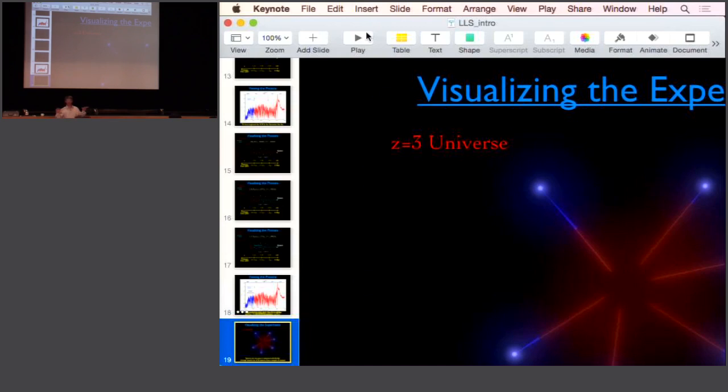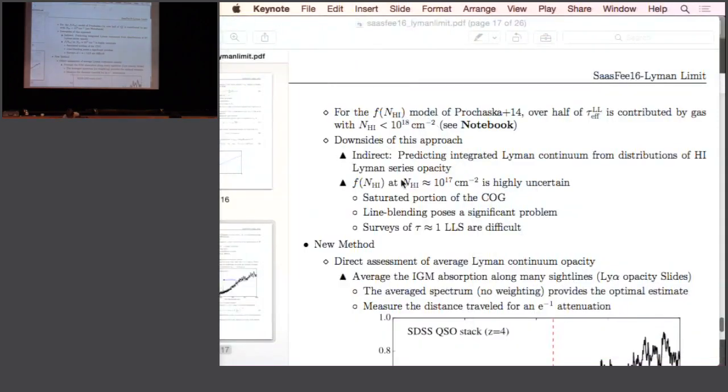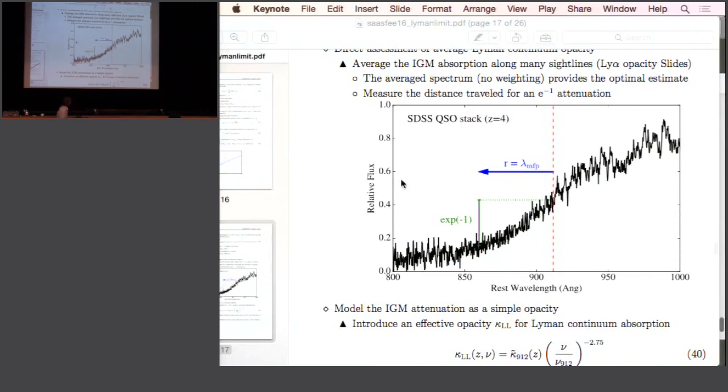So we resort to averaging the spectra. I have a hundred quasar spectra. I normalize the flux so that each one contributes the same, because I'm interested in the average quantity of the universe. I can put all those ionizing photons together and look for the mean decrement in the flux as a function of distance from the quasars. Here's an average, first flux normalized and then average spectrum of about 150 quasars at a redshift of four. We see this roll off in the average flux as you go below the Lyman limit. This is dominated by the Lyman continuum opacity.